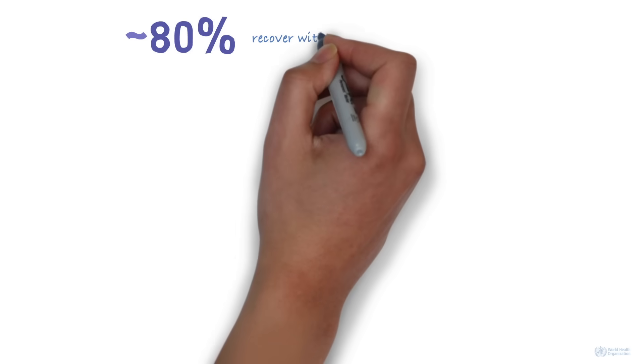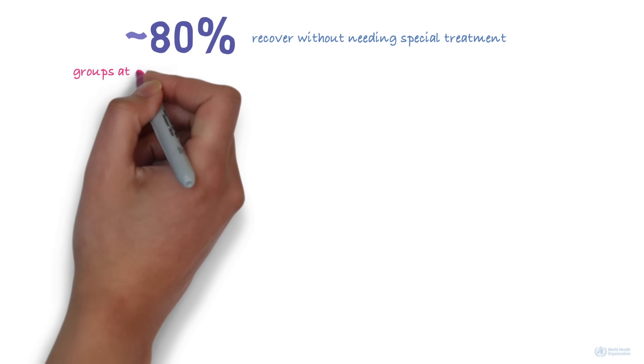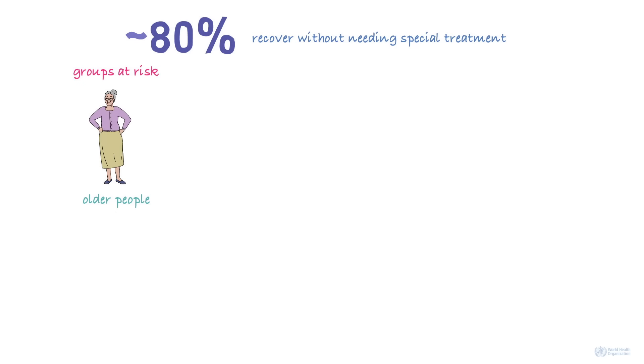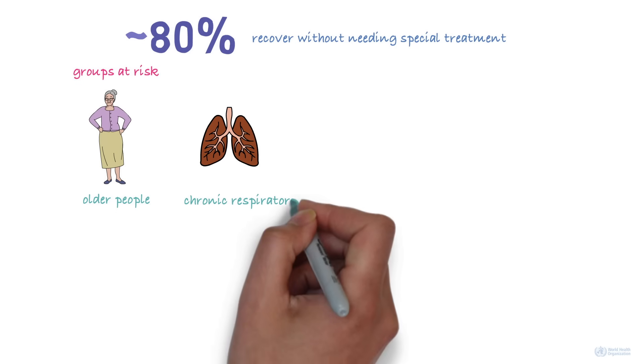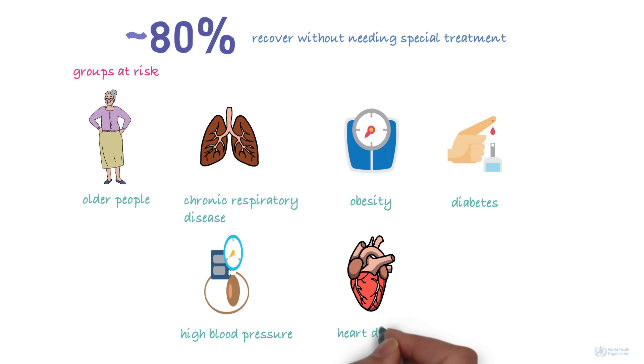About 80% of cases recover from the disease without needing special treatment. But there are some people who are at risk of serious illness. They include older people or people with underlying medical problems, such as chronic respiratory disease, obesity, diabetes, high blood pressure, heart disease, or cancer.